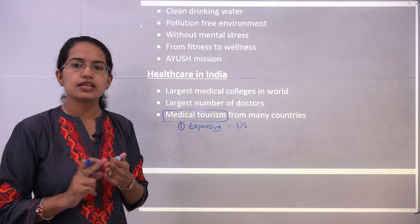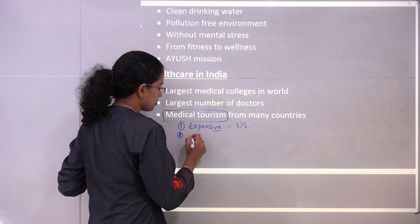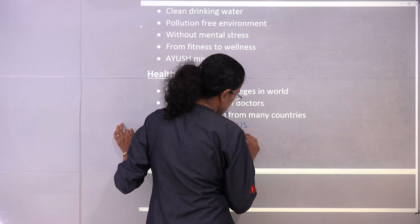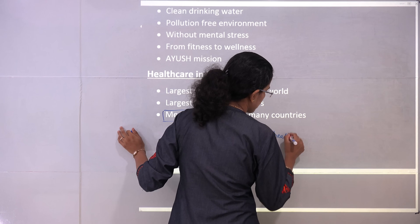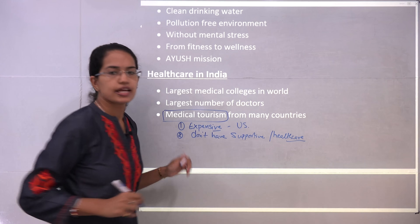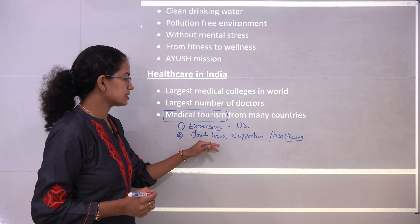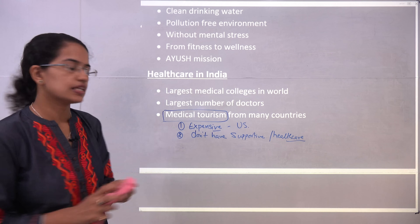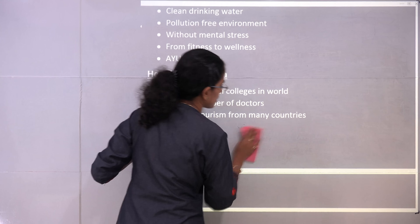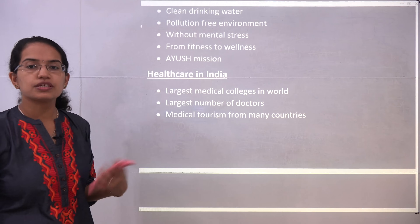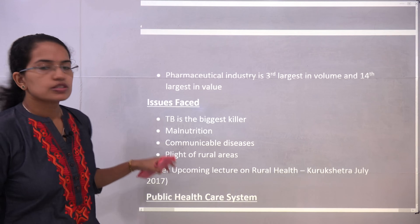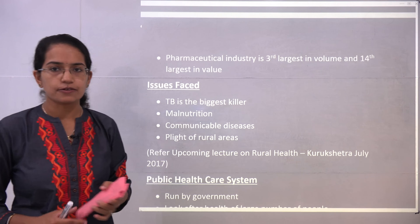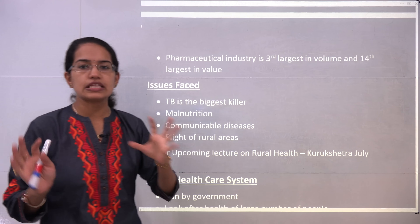Medical tourism occurs firstly because it is expensive in some nations, and secondly because some nations do not have supportive infrastructure or good healthcare facilities. People coming from less developed nations like parts of Africa fall under this category. Medical tourism has been increasing in India over time, boosting the healthcare sector. India's pharmaceutical industry is the third largest in volume and 14th largest in terms of value.